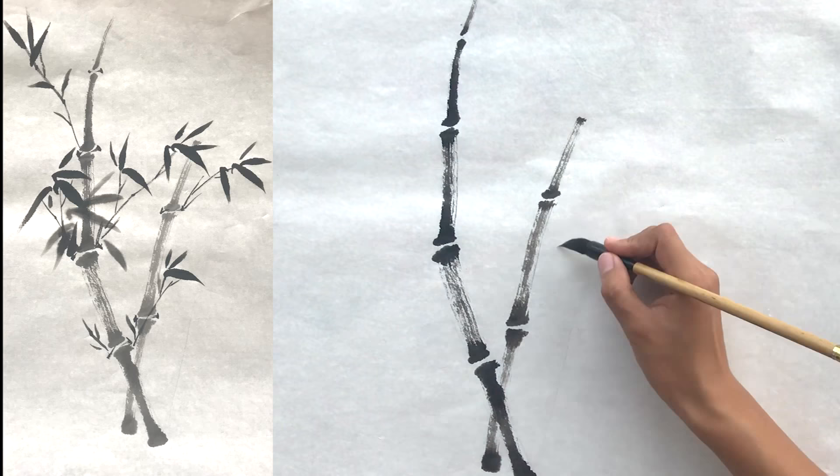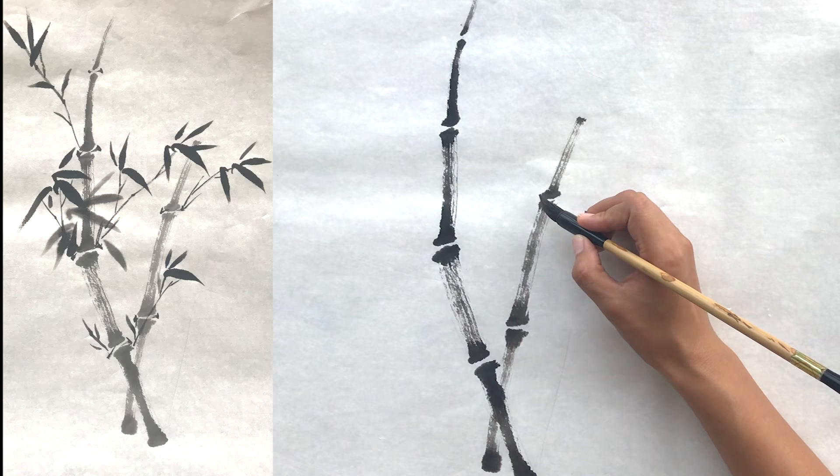Before you paint the thinner branch, you should paint between the two bamboo sections.